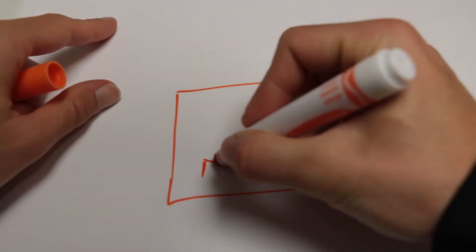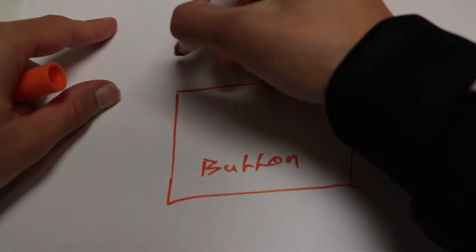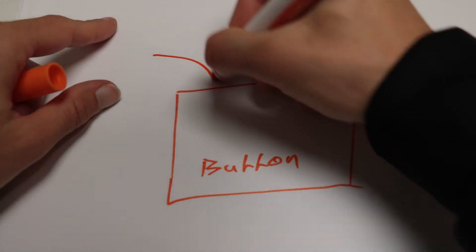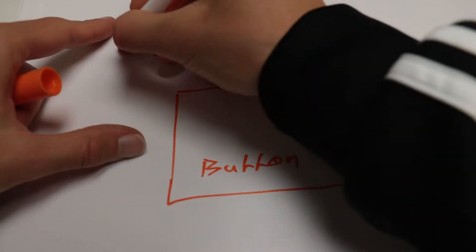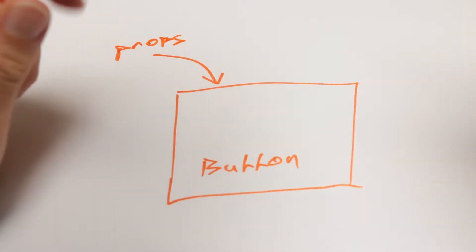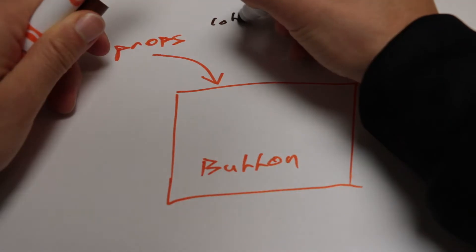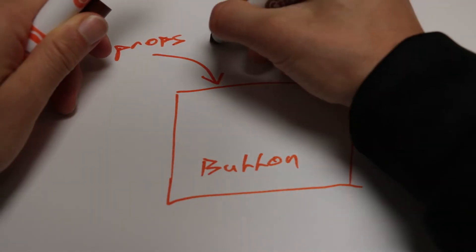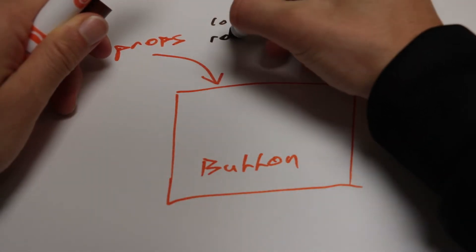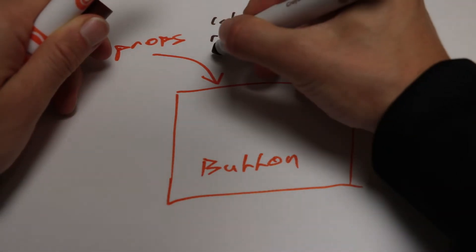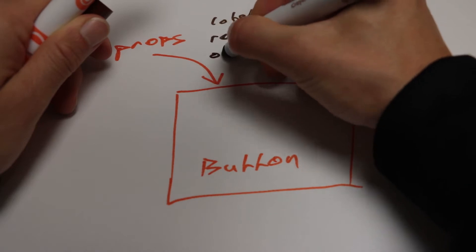Maybe I should draw a picture. Let's say we have this component here — a button. This button gets props from outside. These props can be, let's say, a label, roundedness, and onClick.